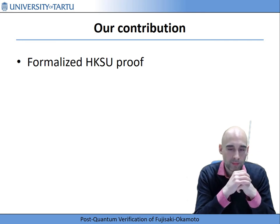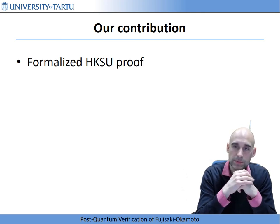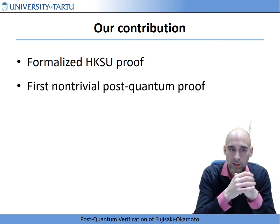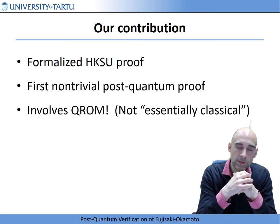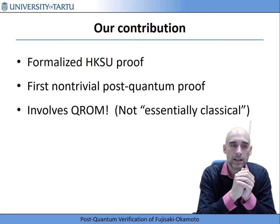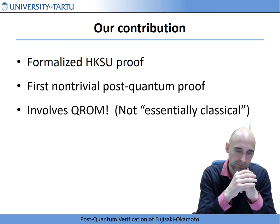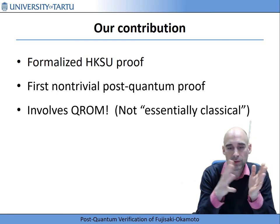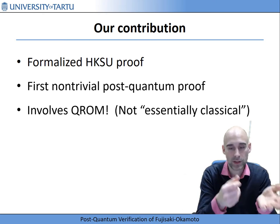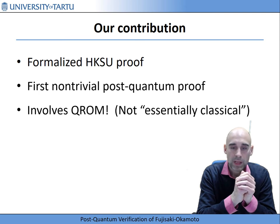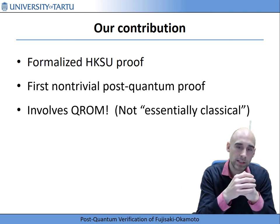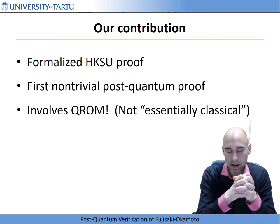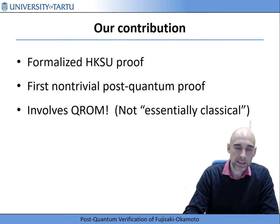Our first contribution is formalizing the HKSU security proof — to our knowledge the first non-trivial post-quantum security proof formalized. It is certainly not the most trivial candidate, because it involves the quantum random oracle model. While many post-quantum security proofs are essentially classical — following the same steps as the classical proof except noting the adversary is quantum polynomial time — this is not true in the quantum random oracle model. There, the adversary can make queries in superposition to the random oracle, making even a classical protocol inherently quantum, which must be taken into account in the analysis.